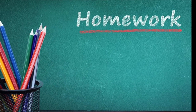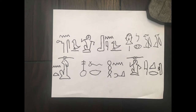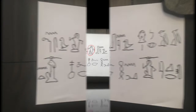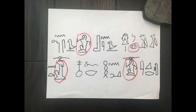At the end of the last lesson, I gave you guys a sentence to learn. Let's see how we did — dividing it up, figuring out where the words are. The first thing I like to do is circle the determinatives, because these help us understand the words and we know they're not pronounced.